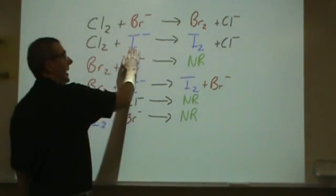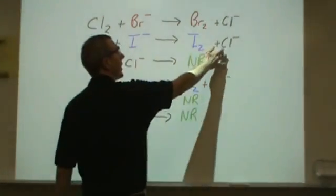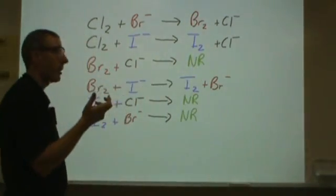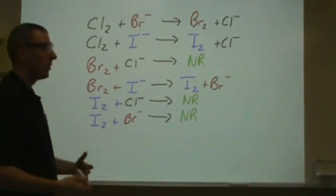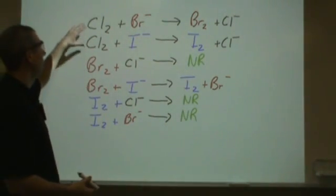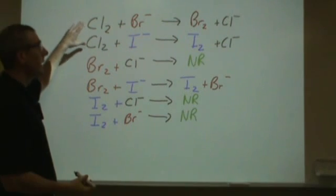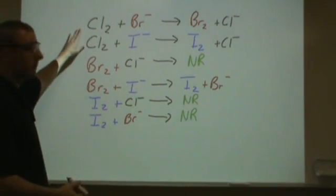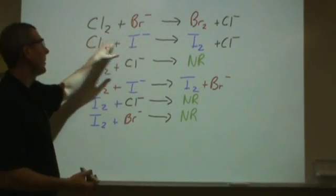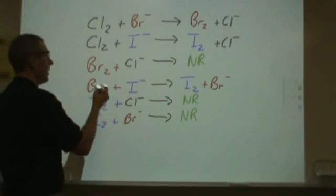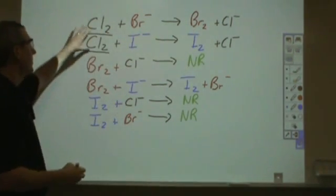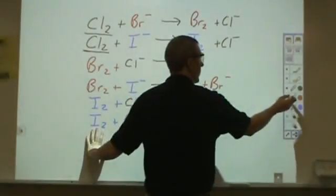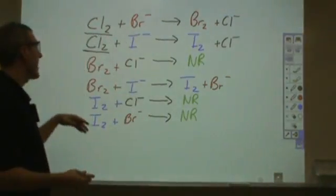Chlorine reacts with iodide, and iodine is not going to react with the chlorine. Those are going to stay as stable products. When I have iodine with chloride, nothing happens. What we can do to analyze this is twofold. First, and more simplistically, we can say chlorine reacts with everything. Chlorine reacts with bromide, chlorine reacts with iodide. We have a reaction taking place. This is the most reactive element of those three. In elemental form, chlorine is going to react.